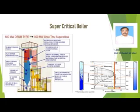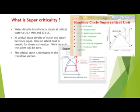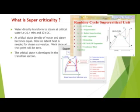Do you know what supercriticality is? The whole base power plant works on the Rankine cycle. In the Rankine cycle, the lower the pressure on the water, the more amount of work and latent heat is required to convert water to steam. If you go to a higher pressure and reach a state where pressure is approximately 221 bar and temperature is 374 degrees centigrade, it will be somewhere on the top of the dome of the Rankine cycle.